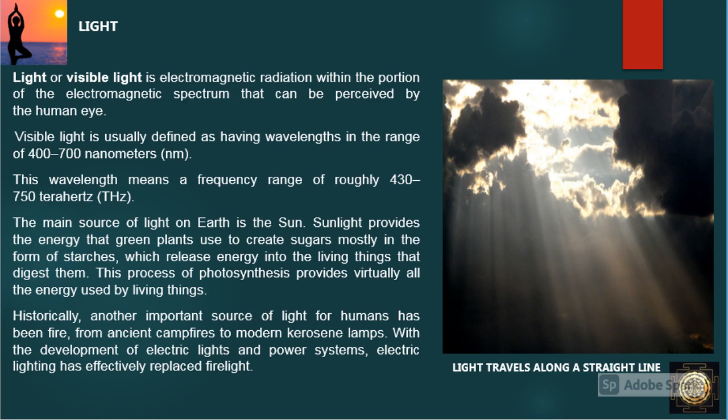Sunlight provides the energy that green plants use to create sugars, mostly in the form of starches, which release energy into the living things that digest them. This process of photosynthesis provides virtually all the energy used by living things.